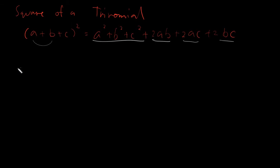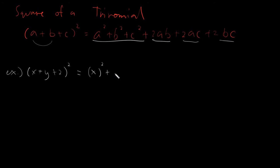Let me give you a specific example — the easiest one. We have (X + Y + 2) squared. First term is X, so we take the square of that. Second term is Y, so we take the square of that. Plus — it's always plus — third term is 2, so we take the square of that. One key to learning special products is substituting properly.